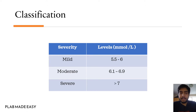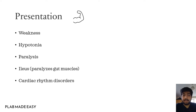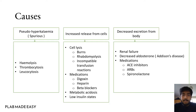Hyperkalemia usually presents with muscular symptoms but it can also cause focal neurological signs. The usual presentation is with weakness, hypertonia, paralysis, ileus, and cardiac rhythm disorders. Hyperkalemia can be due to three mechanisms.